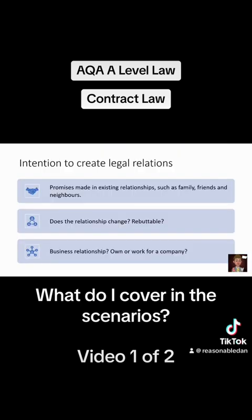The next issue is intention to create legal relations. Usually this involves promises made in existing relationships such as family, friends, and neighbours. You look at the rebuttable presumption that there is no intention to create legal relations, or whether it's a halfway house. You're also looking at whether the relationship changes at any point or whether they have some sort of business relationship. You need to make a balanced judgement about how serious the promise is. Often for businesses the Consumer Rights Act applies, which presumes legal relations always exist, so intention to create legal relations is more likely to be about family, friends, and neighbours.